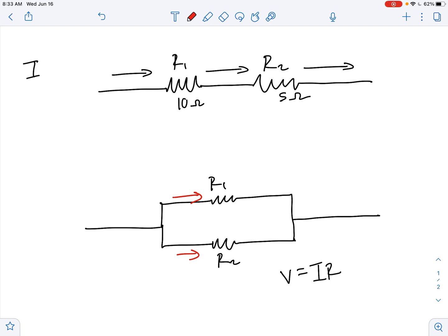Current you can think about as the flow of electrons through a circuit. Here the current has no choice other than to remain the same throughout the circuit because it only has one path - it's going straight down the road.